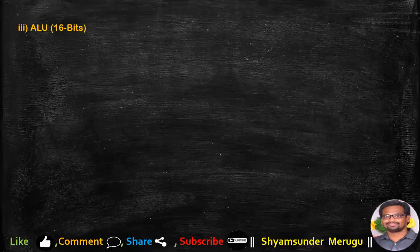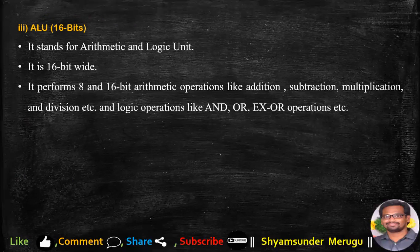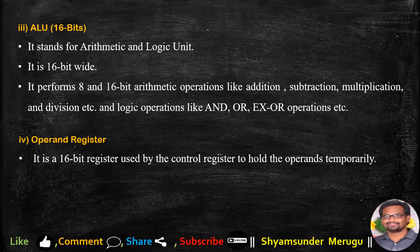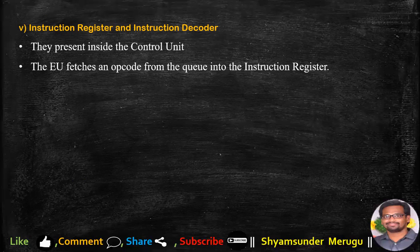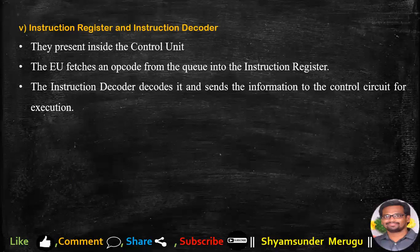Coming to ALU, which is 16-bit. It stands for arithmetic and logic unit. It performs 8 and 16-bit arithmetic operations like addition, subtraction, multiplication, and division, as well as logic operations like AND, OR, and XOR. The operand register is a 16-bit register used by the control unit to hold operands temporarily and is not available to the programmer. The instruction register and instruction decoder units are present inside the control unit. The EU fetches an opcode from the queue into the instruction register; the instruction decoder decodes it and sends the information to the control circuit for execution.